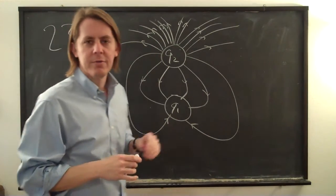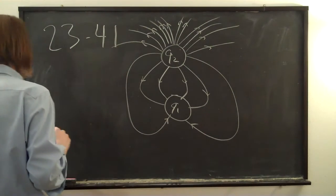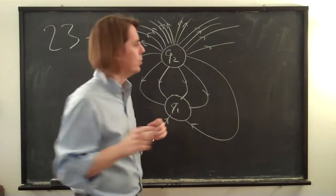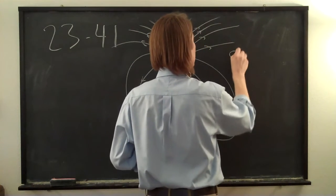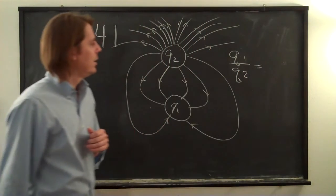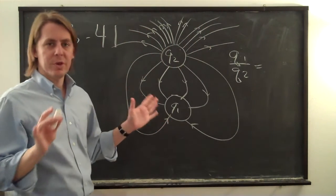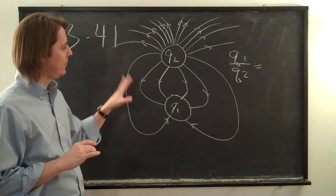So it draws this field diagram and then asks you two questions. The first question is determine the ratio Q1 to Q2, the ratio of the charges Q1 over Q2. What is it? So there's no numbers anywhere, right? This is not a problem that you do with math. This is one you do based on field lines.